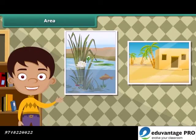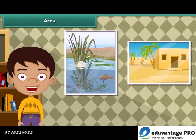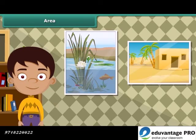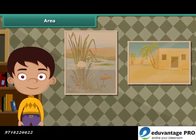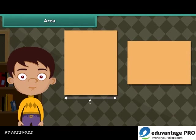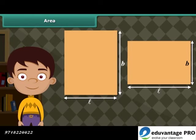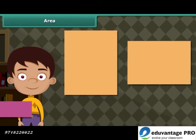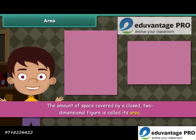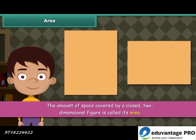Take two paintings of different sizes and compare them. The amount of space covered by the two paintings will be different. This is because the lengths and breadth of the two paintings are different. The amount of space covered by a closed, two-dimensional figure is called its area.